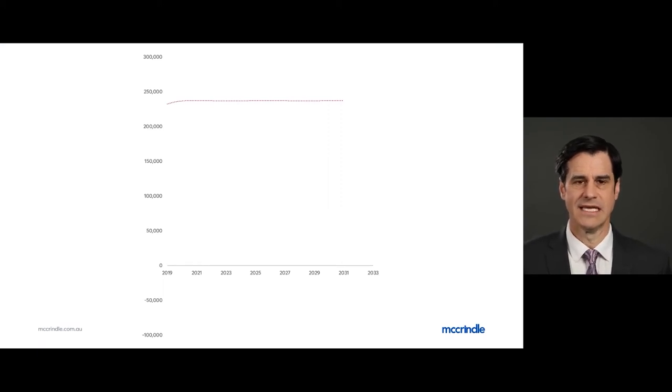We were expecting to see 230,000 net increase in population just through net overseas migration, but rather we've had net emigration in the last 12 months.